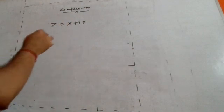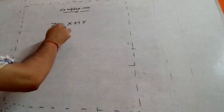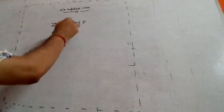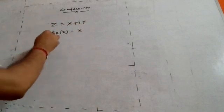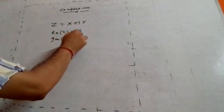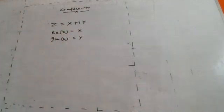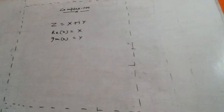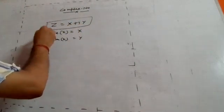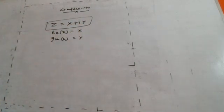Here x is the real part of the complex number and y is the imaginary part — it is the coefficient of i. Both x and y belong to the set of real numbers ℝ. So a complex number z = x + iy is a mixture or combination of a real number and an imaginary number.